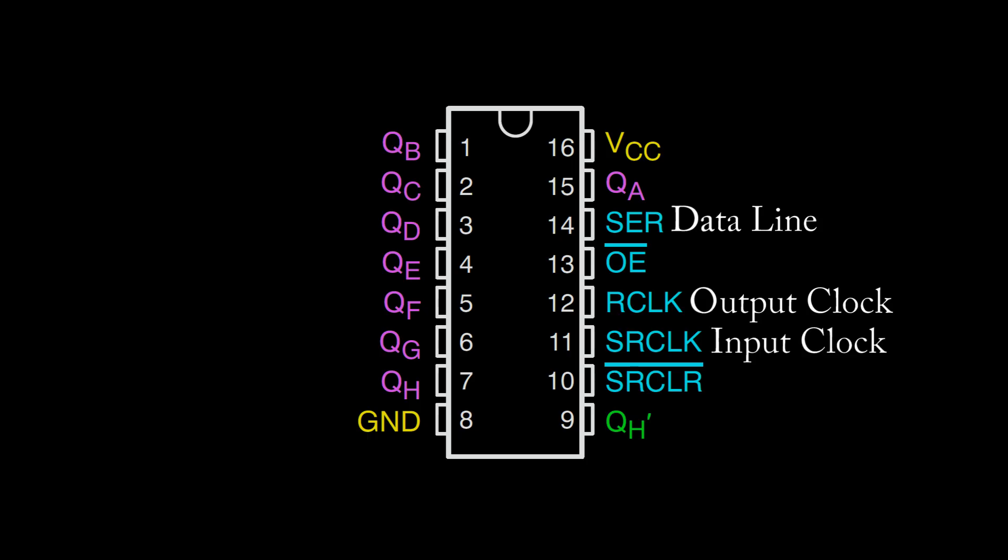I'm only renaming them to make it easier to understand. The input clock pin is what shifts data into memory, and the data line is the value that it puts into memory, either a one or a zero. Anytime the output clock is triggered, the data in the memory is copied onto the output.